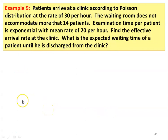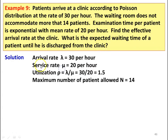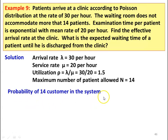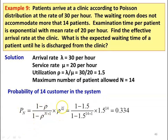Example: Patients arrive at a clinic according to a Poisson distribution at the rate of 30 per hour. The waiting room does not accommodate more than 14 patients. Examination time per patient is exponential with a mean rate of 20 per hour. Here λ = 30/hr, μ = 20/hr, ρ = 30/20 = 1.5, and N = 14. Using Model 2, P_14 = [(1 − 1.5) / (1 − 1.5^15)] × 1.5^14 = 0.334.